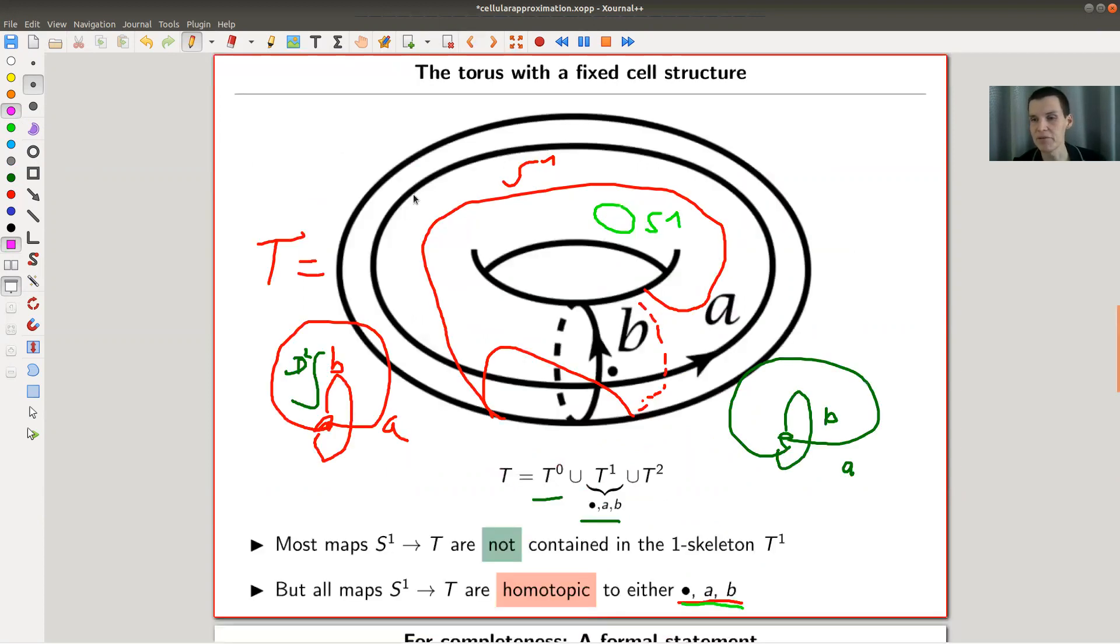In this example, so here was a torus with zero skeleton, one skeleton, and two skeleton, and I was interested in maps from S^1 into T. And S^1, of course, only has a zero skeleton and the one skeleton.